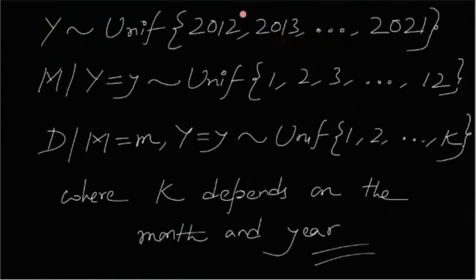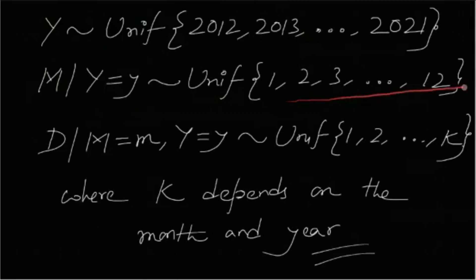After the year has been chosen, the month is chosen from that given year. So the distribution of M given Y = y follows discrete uniform over {1, 2, ..., 12}. These numbers denote the month number: 1 denotes January, 2 denotes February, 3 denotes March, and so on. 12 denotes December.